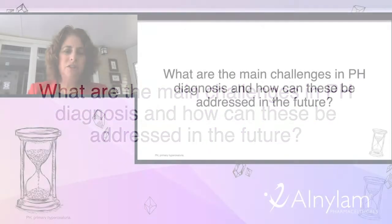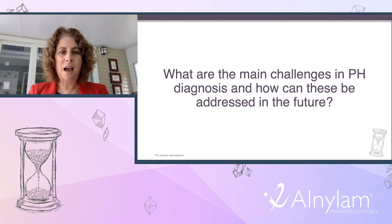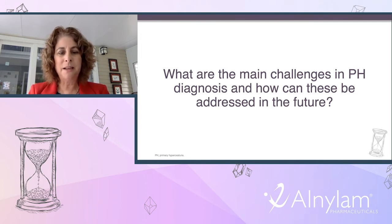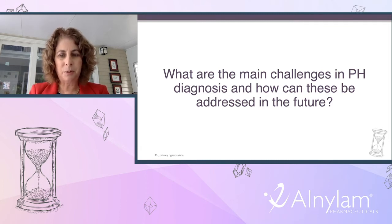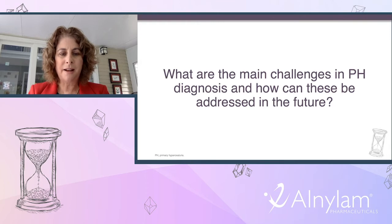The main challenges for diagnosis of primary hyperoxaluria are related to recognition. Increasing awareness of this diagnosis, how to make it, and how to treat patients is critical. Starting from the beginning to evaluate a patient when they initially present with kidney stone disease is important, including measuring 24-hour or random urine solutes. The main challenges relate to education of caretakers and physicians, and empowering patients to ask questions about why they have kidney stone disease.